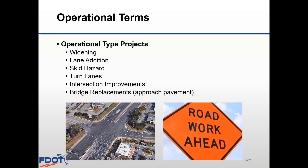Operational type projects typically only have a length of a thousand feet or less, so they're relatively small. Examples would be turn lanes, skid hazard projects, intersection improvements, or bridge replacements that include a short piece of pavement on either approach. These are small scale projects that help to improve the safety and traffic flow.